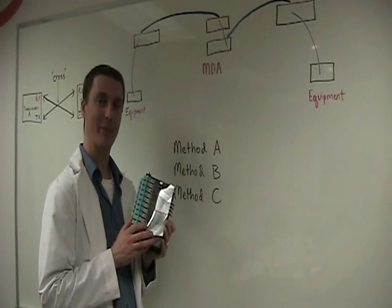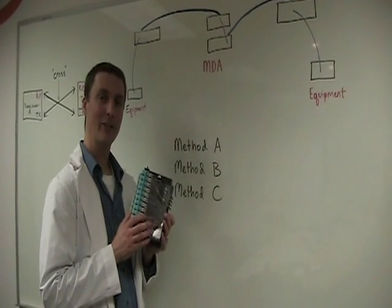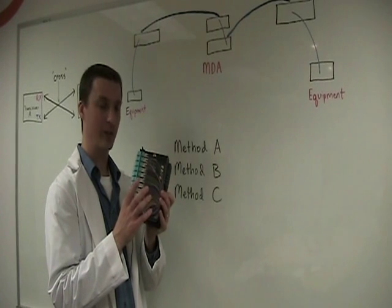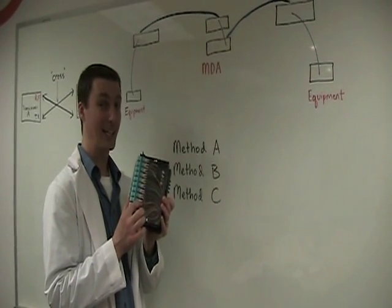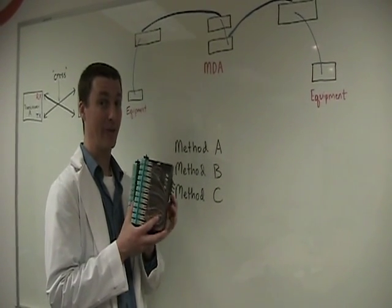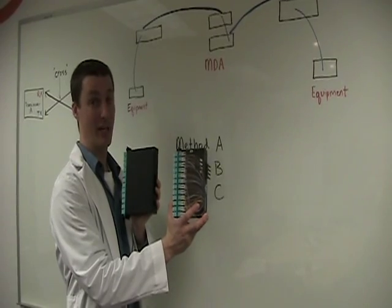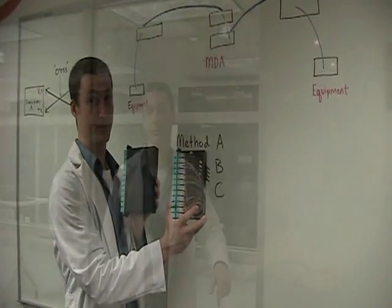And then back to Method B. This is where the cross occurs in the module itself. Again, you're going to have to rely on managing two different types of modules.